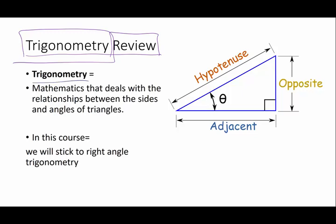Trigonometry is the mathematics that deals with the sides and the angles of triangles. Within this course we're going to work with 90 degree or right angled triangles, and that just keeps it a lot simpler.